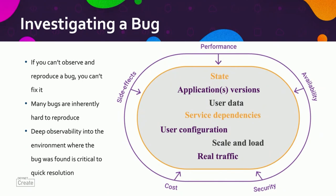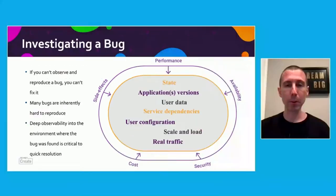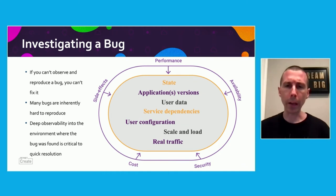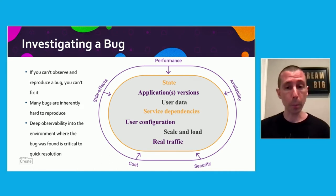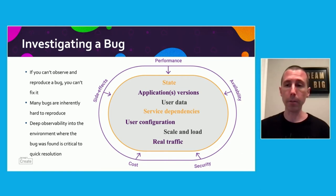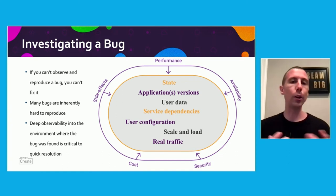So why is all that important? When you need to investigate a bug, you need to be able to observe it — if you can't observe the bug, you can't fix it. Many bugs are inherently hard to reproduce. I've talked to organizations that haven't been able to reproduce and fix a bug for years. Having deep observability into those environments is really key. The state of your application, data within your environment, service dependencies, configurations, and traffic coming in can all have different side effects — affecting availability, cost, security, or performance.